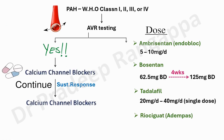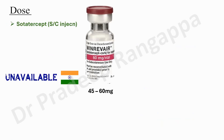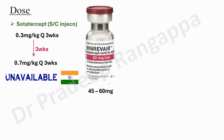Riociguat, available in India as Adempas, is preferred in patients with chronic thromboembolism pulmonary hypertension. The dosage is 1 mg three times a day, increased every 2 weeks to reach the target dose of 2.5 mg three times a day over 6 weeks. Sotatercept, available as Winrevair at 45 to 60 mg vials, is given subcutaneously at 0.3 mg per kg every 3 weeks, which can be increased to 0.7 mg per kg every 3 weeks — though it is not currently available in India.